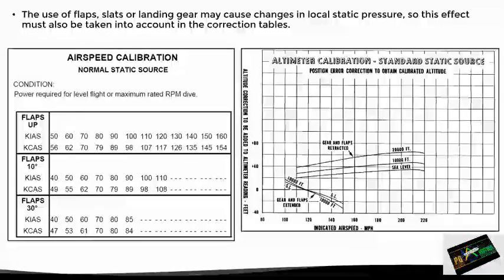In this case, we have a correction table for the airspeed indicator and another for the altimeter, since — as we remember — the static port provides information to all three instruments. Now, as we remember, the pitot tube had a heating system that prevented it from being blocked by ice, so the question now is: what happens if the static port gets blocked?